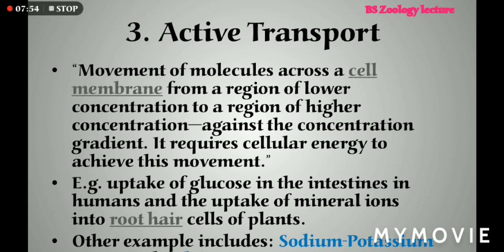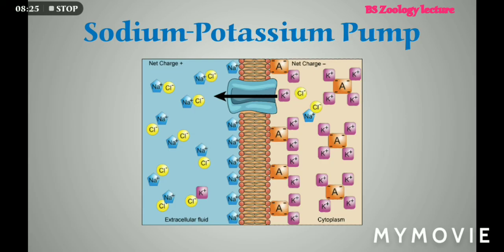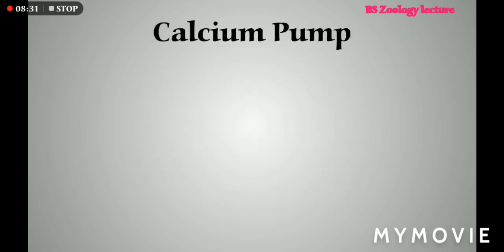The last type of transport is active transport. Active transport is the movement of molecules from a lower concentrated area towards a higher concentrated area, so it requires some type of energy in the form of ATP. For example, uptake of glucose in the intestine in humans, uptake of mineral ions into root hair cells of plants. Other examples include the sodium-potassium pump and the calcium pump — which involve movement of sodium and potassium across the cell membrane.